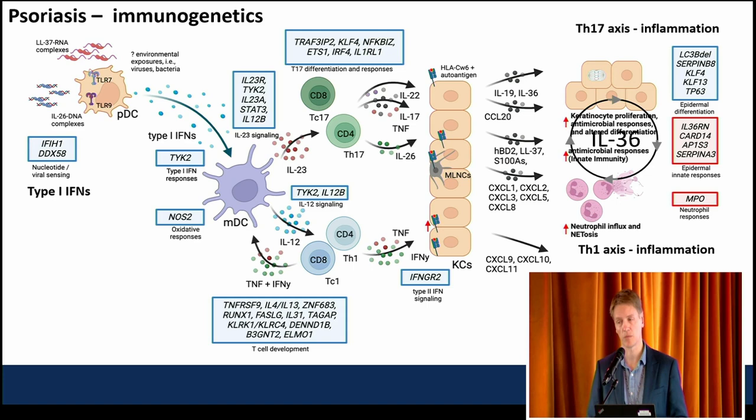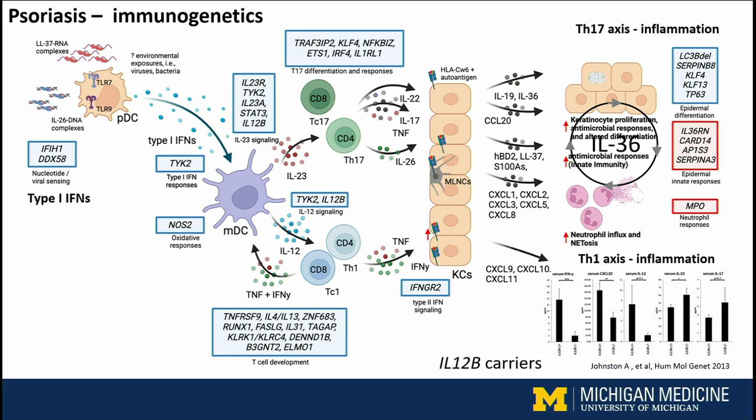If you look at IL-12B, which encodes for the P40 subunit of IL-12 and IL-23, it straddles both axes of the T-cell response in psoriasis — it's part of IL-23 and also part of IL-12. We published a study in Human Molecular Genetics about 10 years ago where we looked at patients with psoriasis that had two copies of the risk gene versus those that did not. What we found is that patients with two copies of the IL-12B risk gene have higher interferon gamma response and actually lower IL-23, really showing that this risk allele is skewing the response towards a TH1 response.